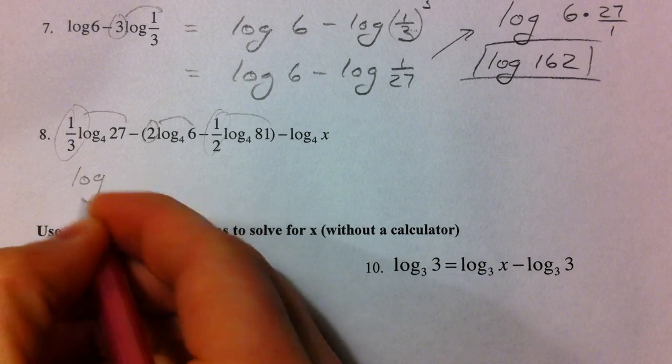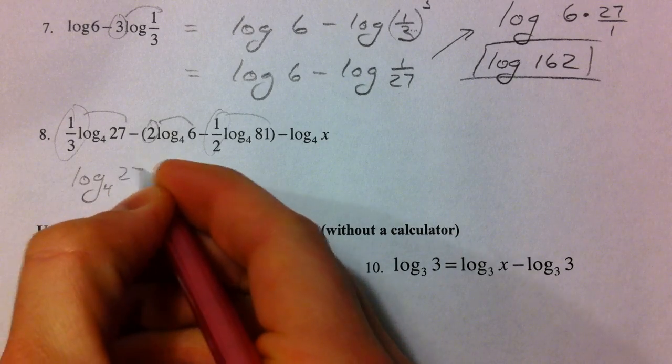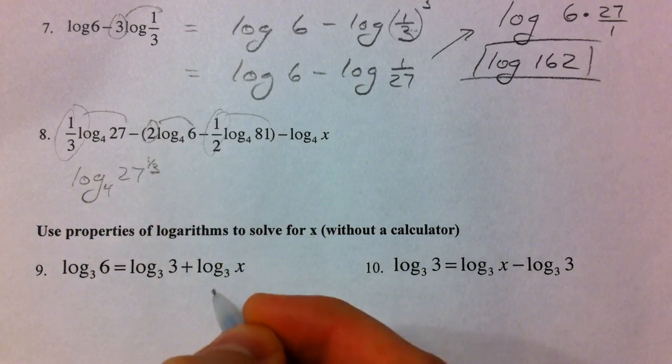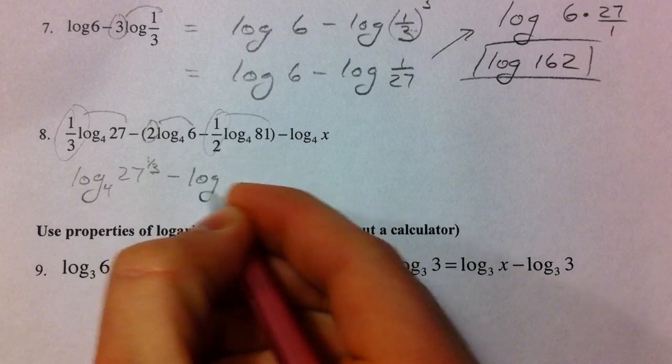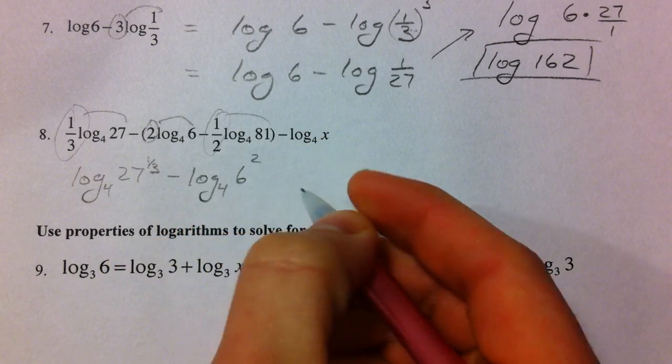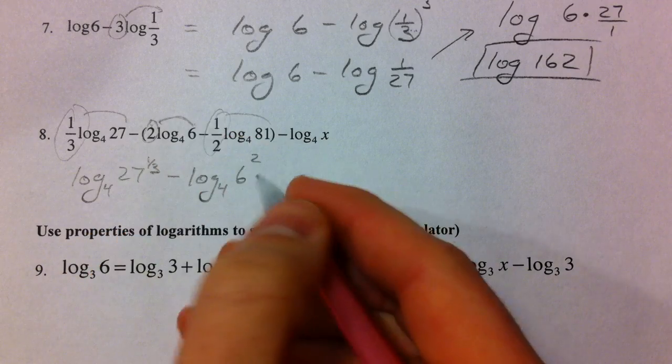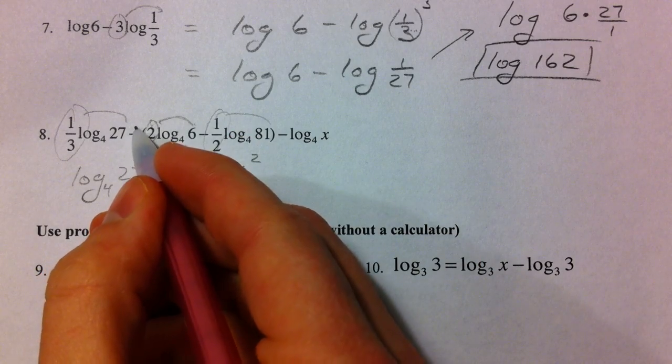So, log base 4 of 27 to the 1/3 power, minus log base 4 of 6 squared, hold the 2 up top, and I'm distributing this minus.